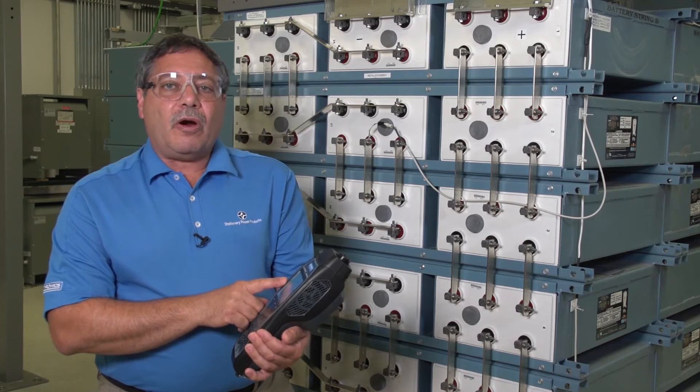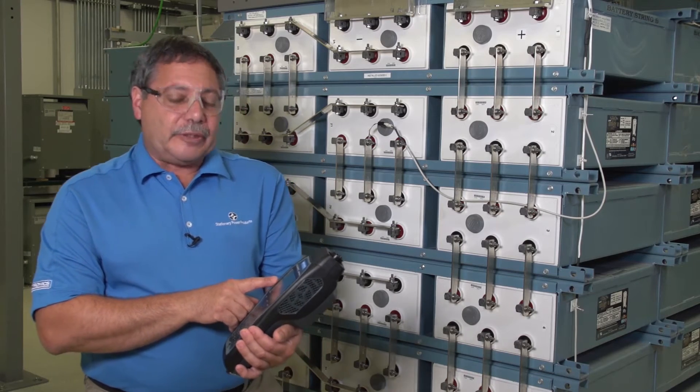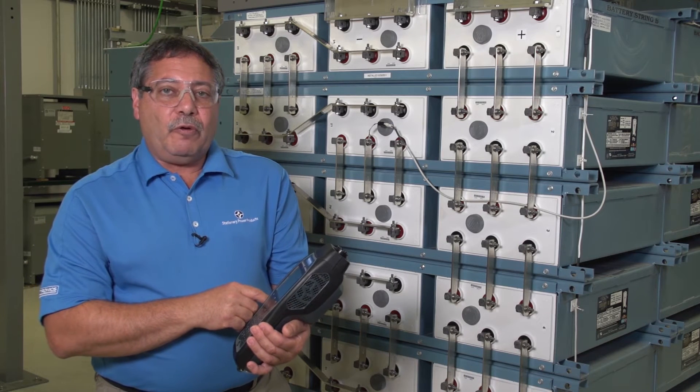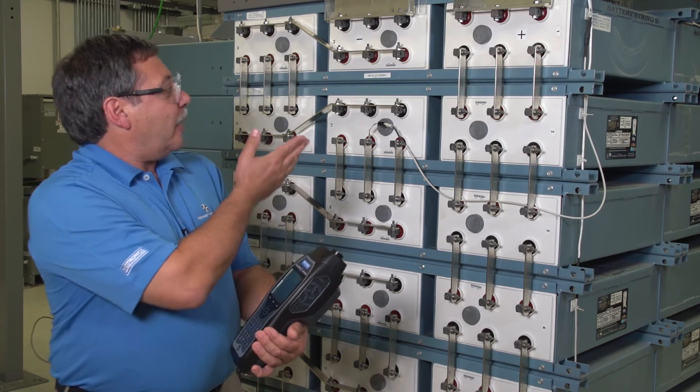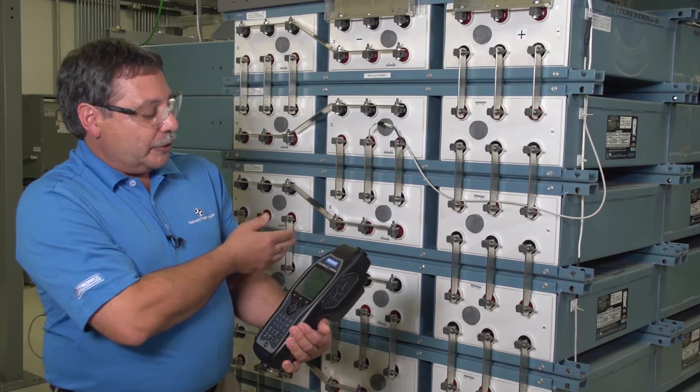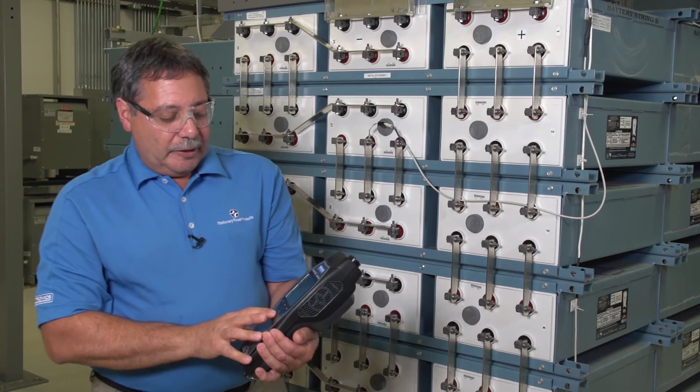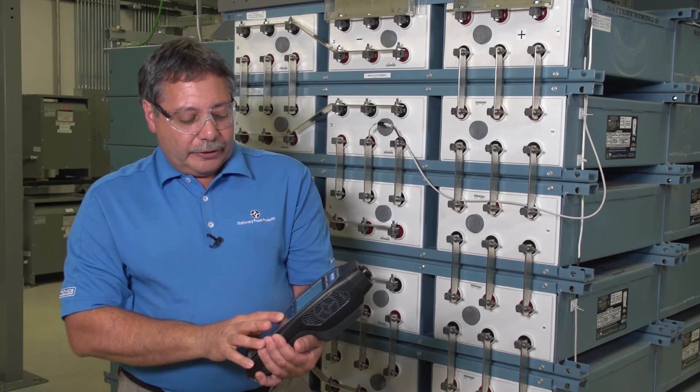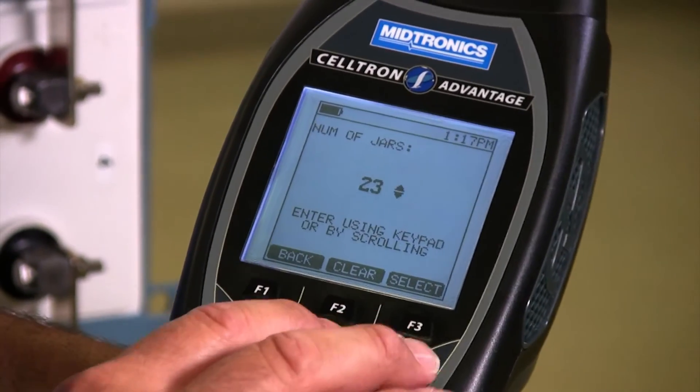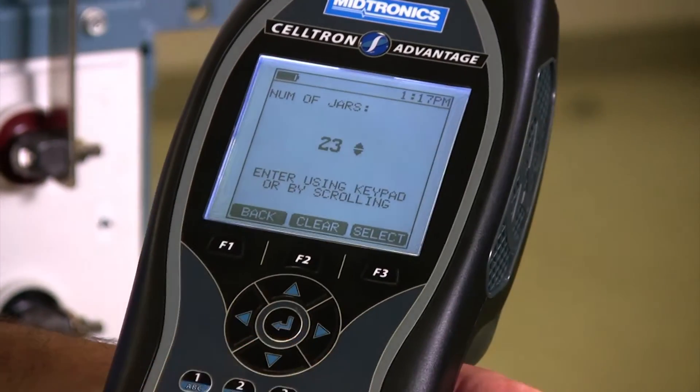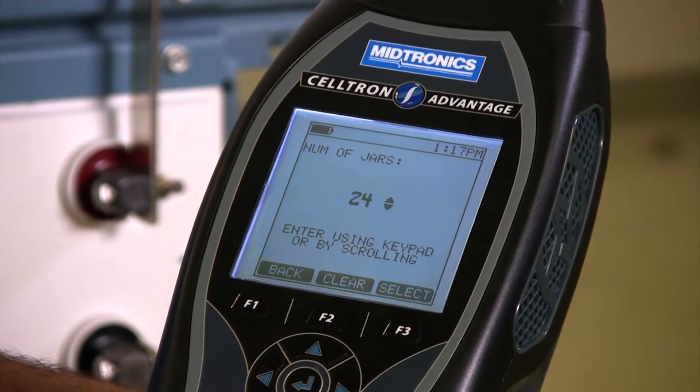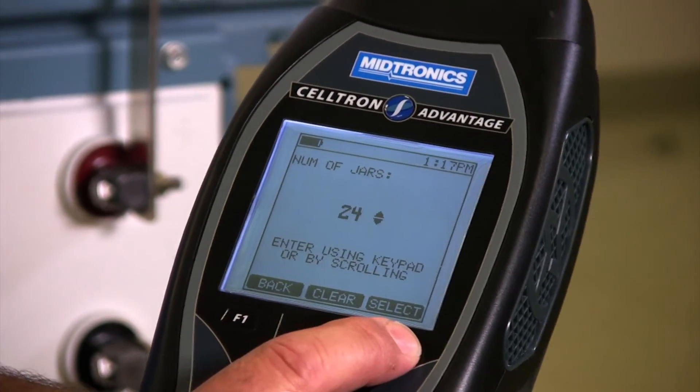First we want to know the number of jars or cells or batteries that we're going to be testing. The default is 24. Happens to be that the string of batteries we're going to be testing today is 24 cells. So I could leave that. But if I had to change it, you just drill into the menu. You could scroll up and down to change things, or you can enter the value in with the keypad. So here I'm going to have 24. Select.